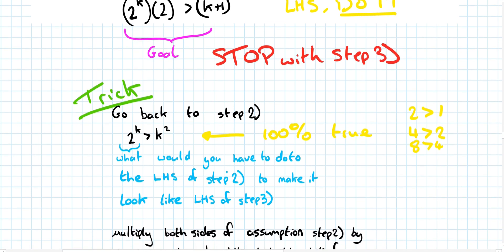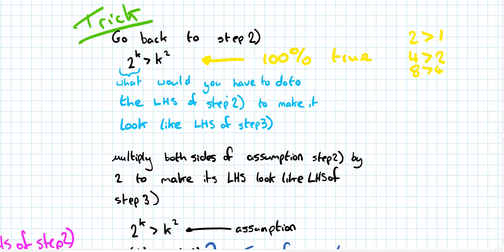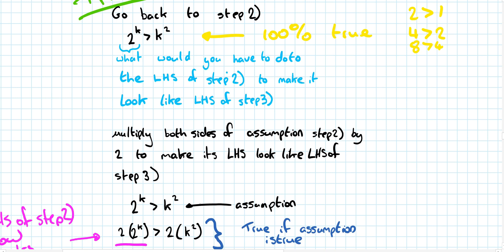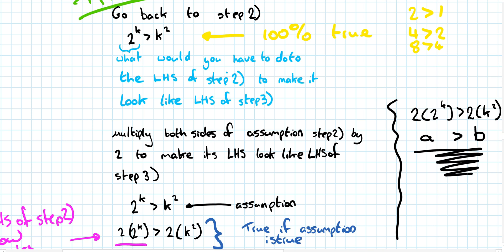So I'm going to multiply both sides by 2. That was our assumption — we've multiplied both sides. As far as I'm concerned, if this is true then this must be true. As long as the assumption is true, this must be true. This is now equal to the left hand side of step 3. So I'm going to call this 2 to the power of k plus 1, which is greater than 2k squared. That is a greater than b. This is true — 100% true.